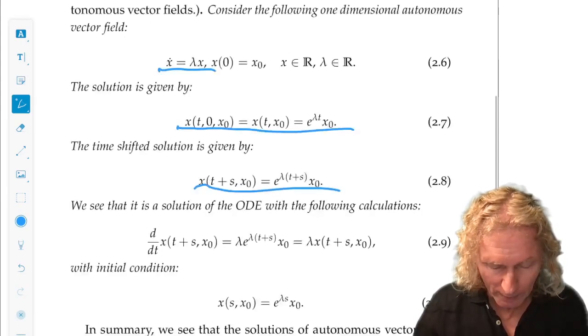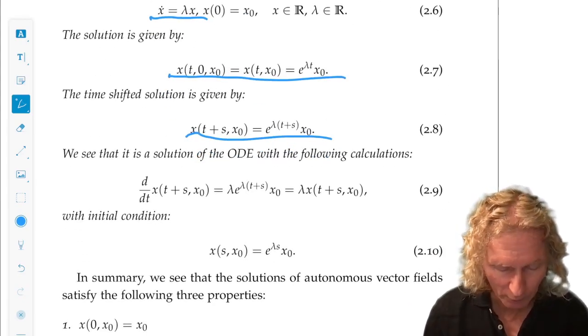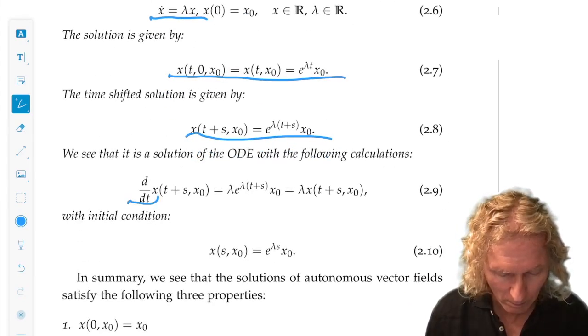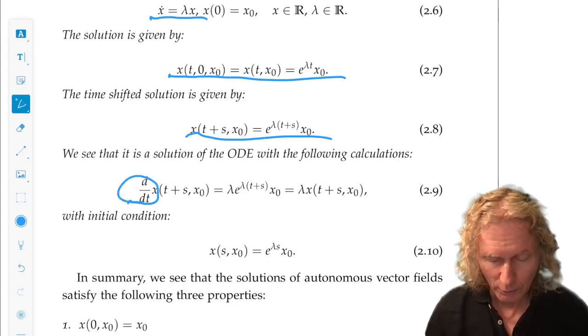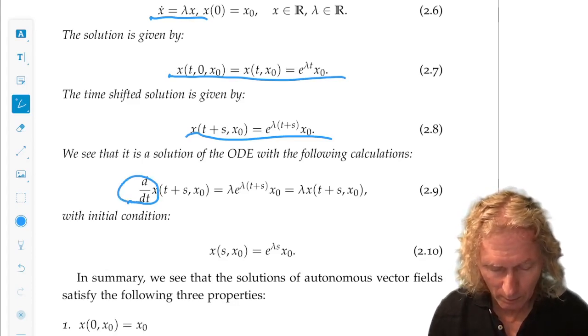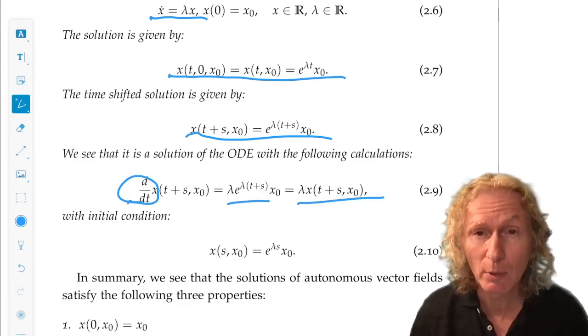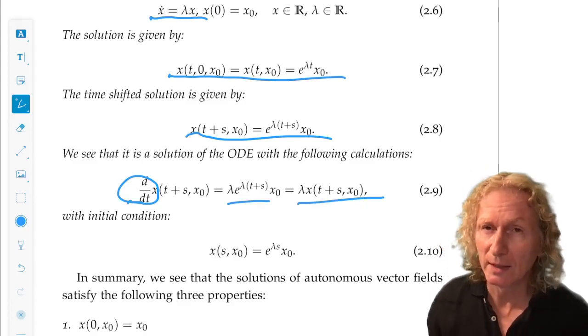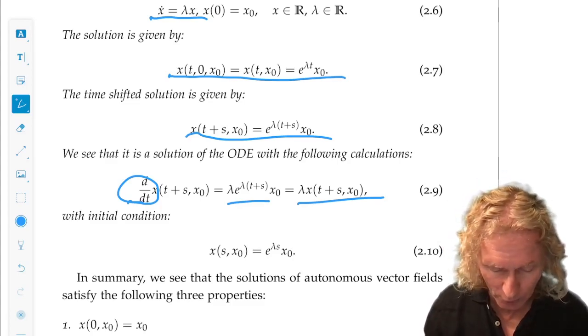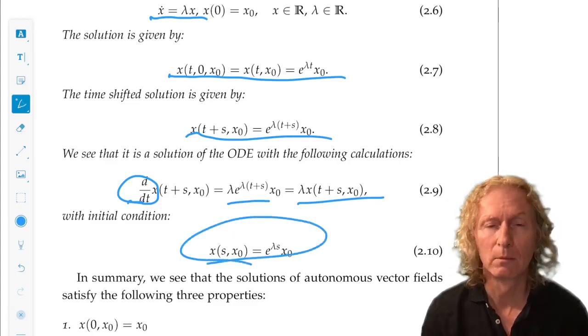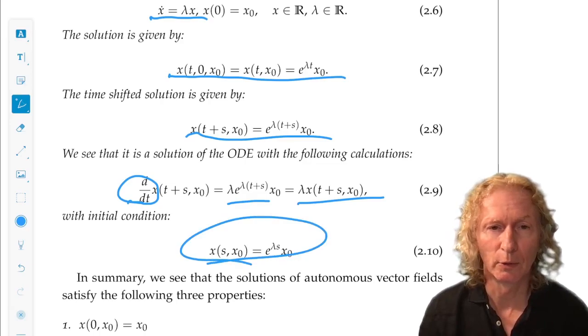Now, time shift that solution. That's straightforward. And then we can substitute the time shifted solution in, do the differentiation, and we see we get lambda times x of t plus s x_0. And the initial condition of that solution is this expression right here.